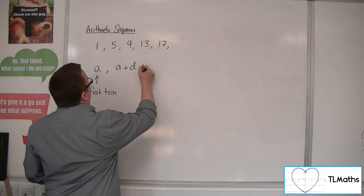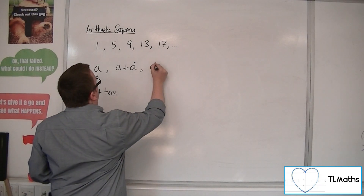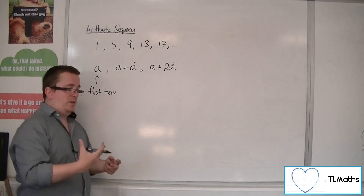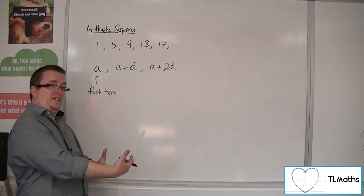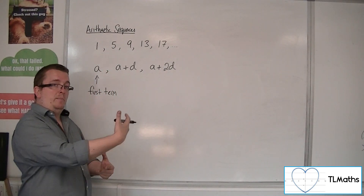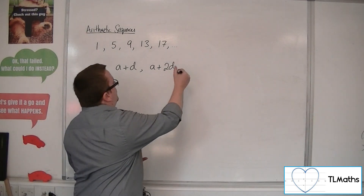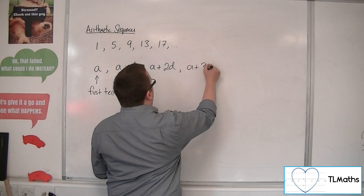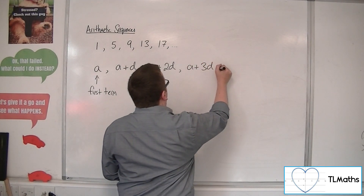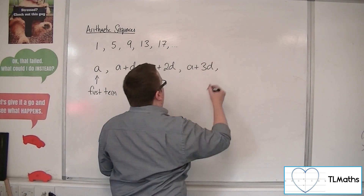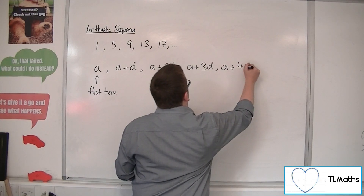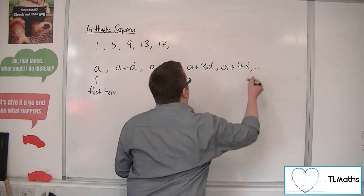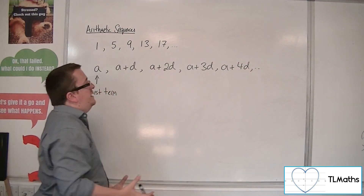Your third term is A plus 2 lots of D, because you're adding on another D — A plus D plus D. Then your next term will be A plus 3D, and then A plus 4D. And you can see that that will continue on indefinitely.